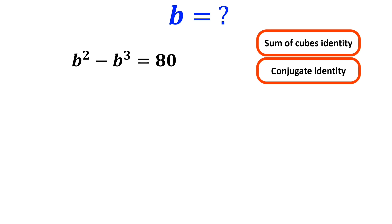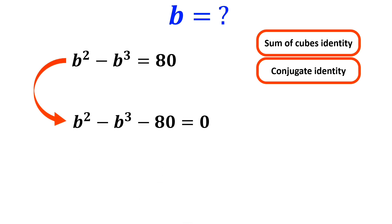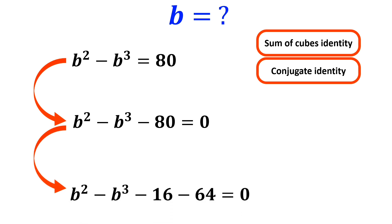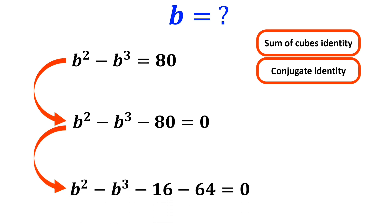First, we write this equation as b squared minus b cubed minus 80 is equal to 0. Now, we rewrite this as b squared minus b cubed minus 16 minus 64 is equal to 0.